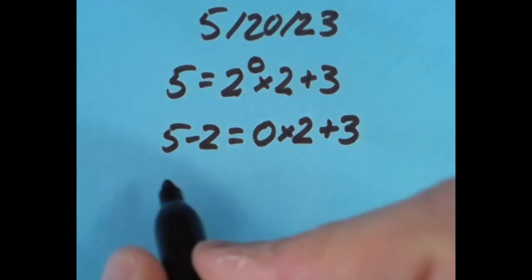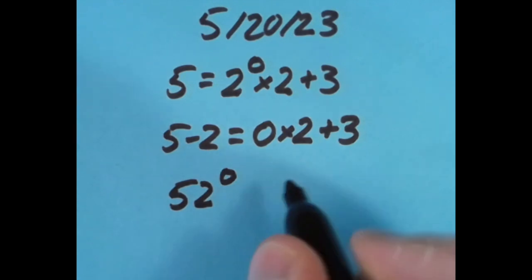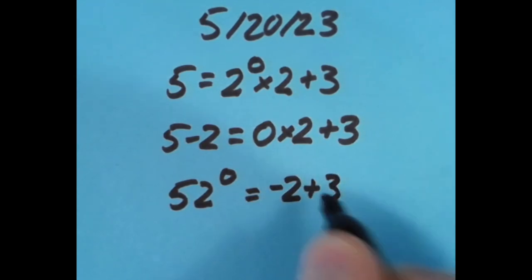With the equal sign another spot to the right, I said 52 to the zero power, which is just going to be 1, and so is negative 2 plus 3.